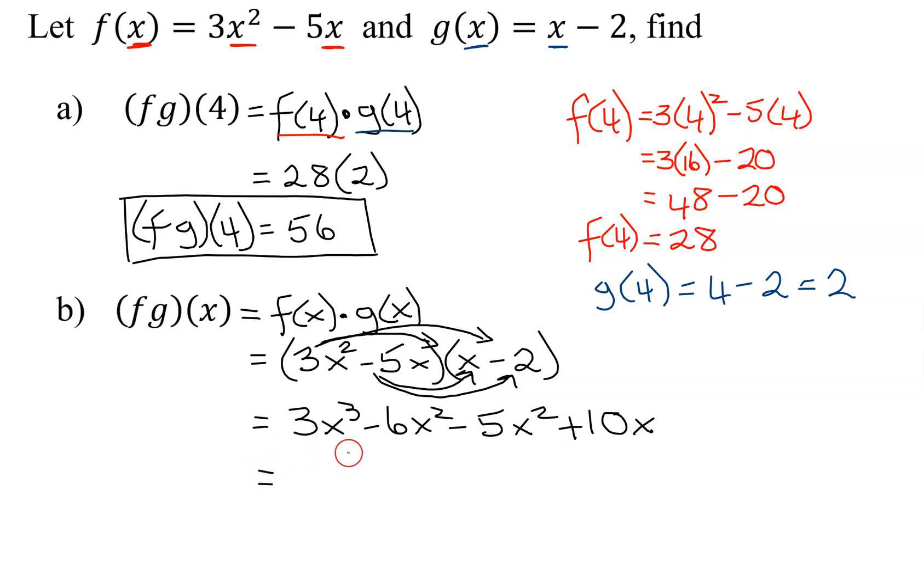Do I have any like terms here? Yes, the middle two terms are x². So it's going to give me 3x³. Then I have negative 6x² minus 5x² is negative 11x² and plus 10x. These are all unlike terms, so I cannot simplify anymore. So our product function f times g of x is equal to 3x³ minus 11x² plus 10x.